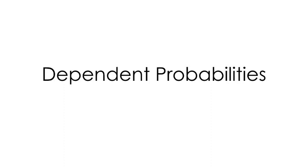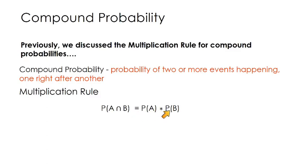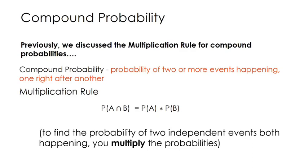In this video, we are going to examine dependent probabilities or probabilities of dependent events. We've got to start by reminding ourselves what compound probability is. Compound probability is when we have more than one event happening — two or more events — and we ask what's the probability of both of those happening. We learned about the multiplication rule for when these are independent: the probability of A and B happening is just the probability of the first event times the probability of the second event. We call it the multiplication rule because we multiply the probabilities.